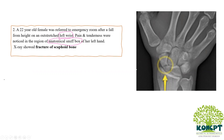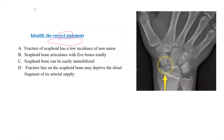You can see the X-ray image here, with yellow arrows pointing towards the fractured scaphoid bone. The question is: identify the correct statement. Option A: fracture of scaphoid has a low incidence of non-union. Option B: scaphoid bone articulates with 5 bones totally. Option C: scaphoid bone can be easily immobilized. Option D: fracture line on the scaphoid bone deprives the distal fragment of its arterial supply.